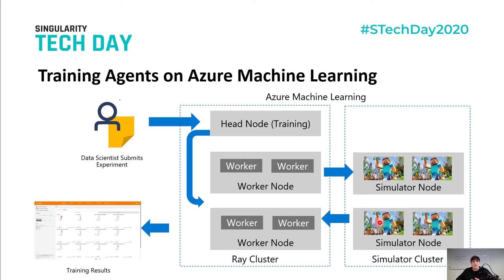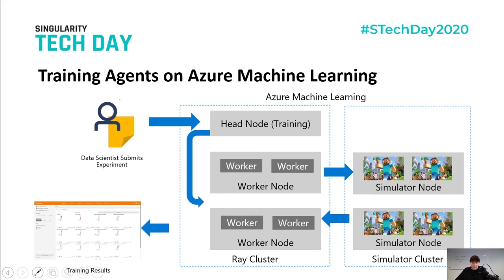The training results include videos showing the agent trying to learn to move inside the Minecraft environment and navigate the maze. We have a head node, some worker nodes, and we download a container image containing the environment. This lets us take the model created by our Machine Learning service, open the Minecraft simulation environment, simulate it, see how the agent performs, and get back results and videos showing how good or bad the agent is.